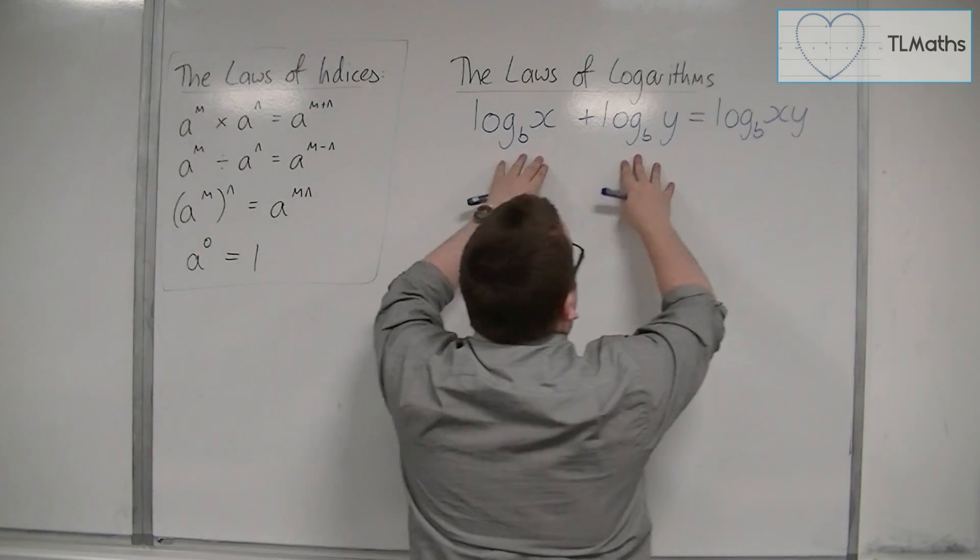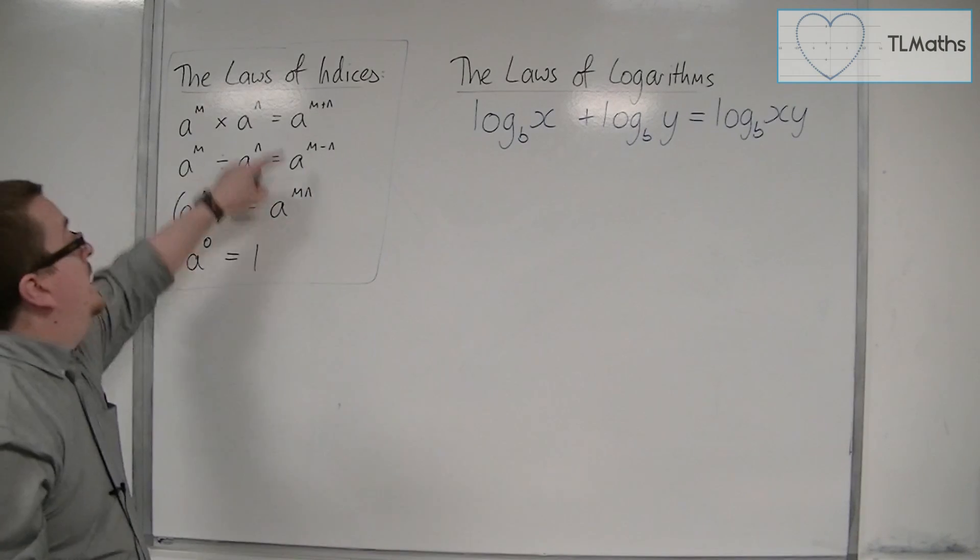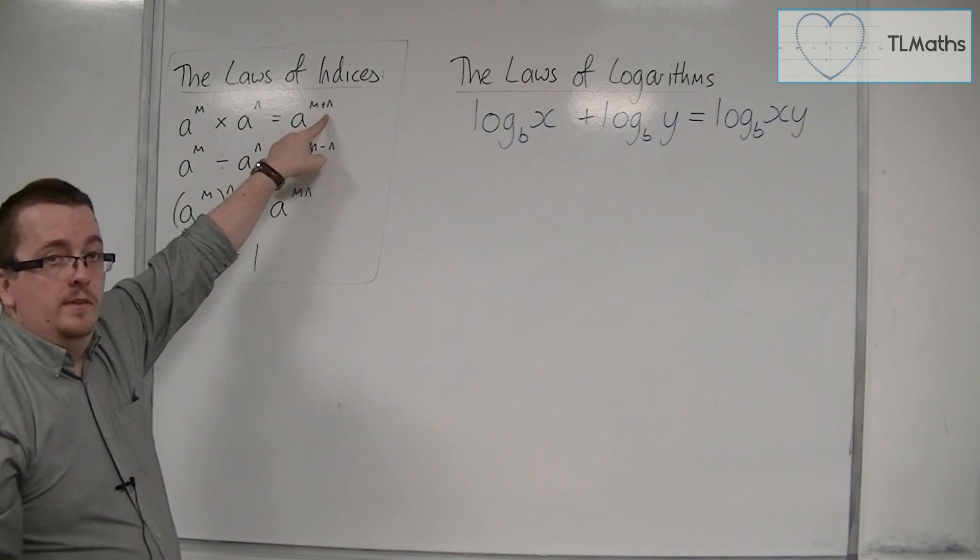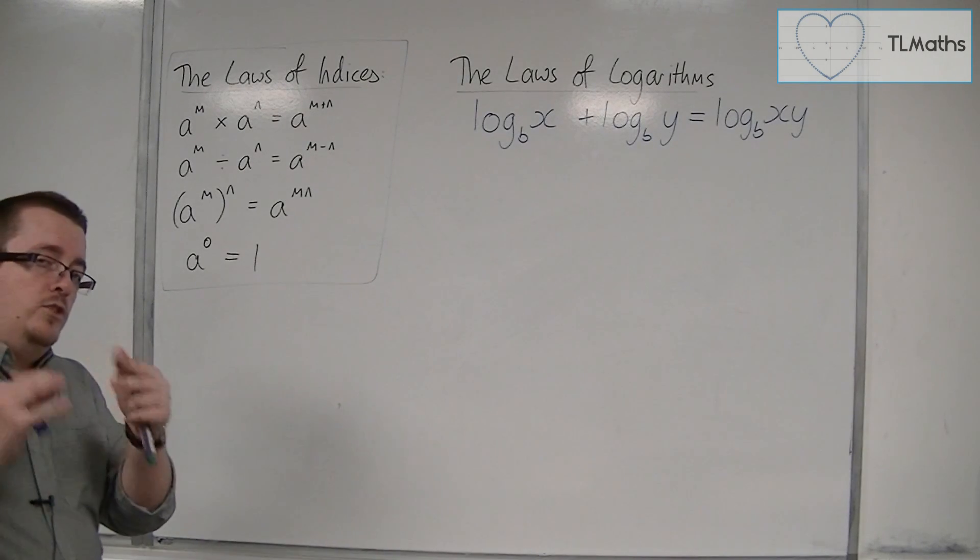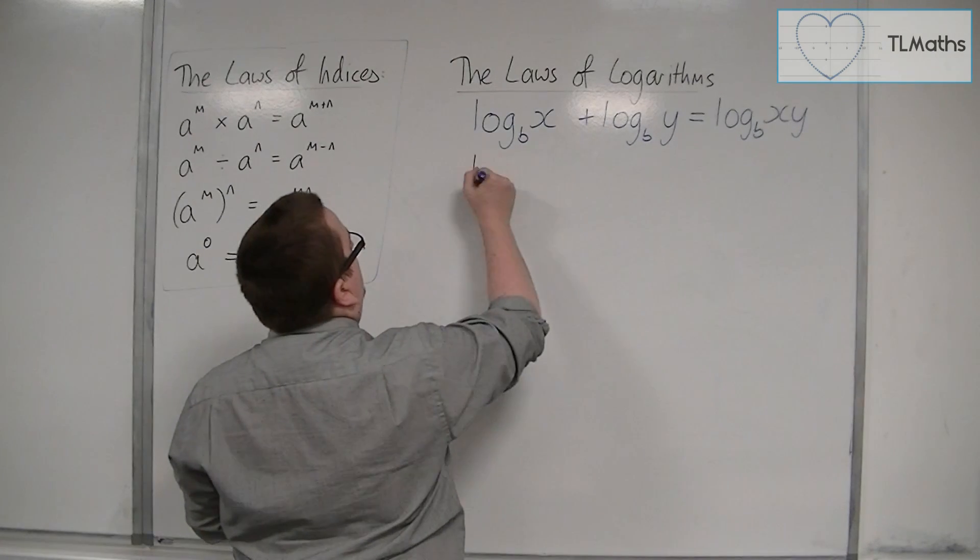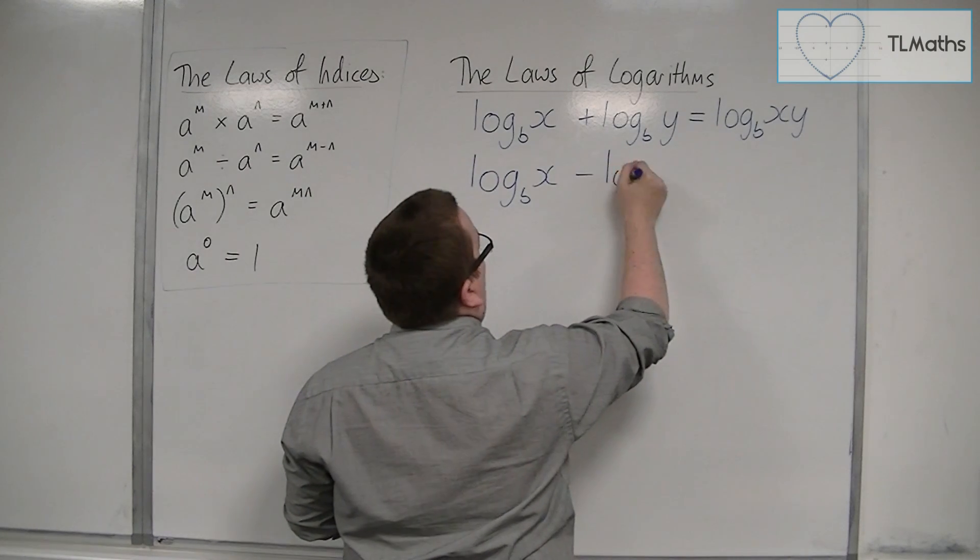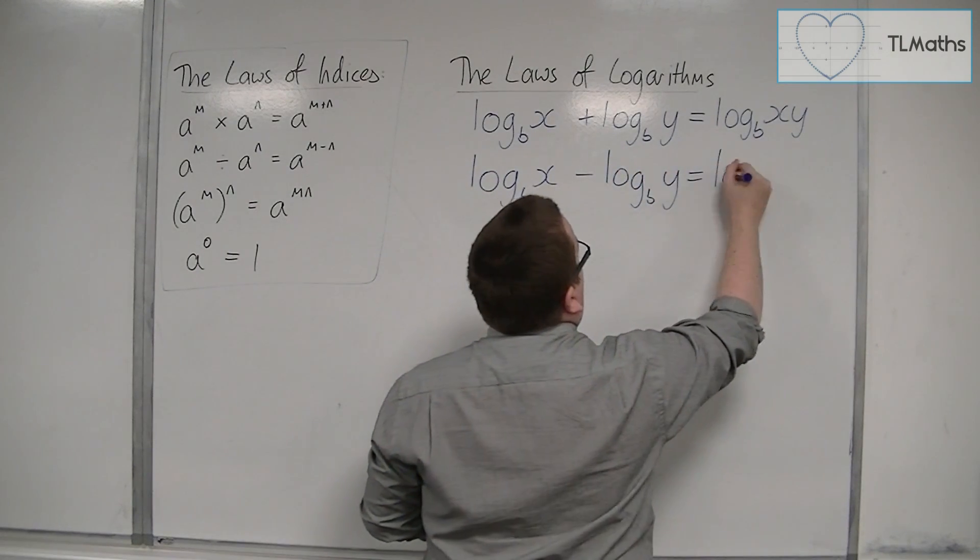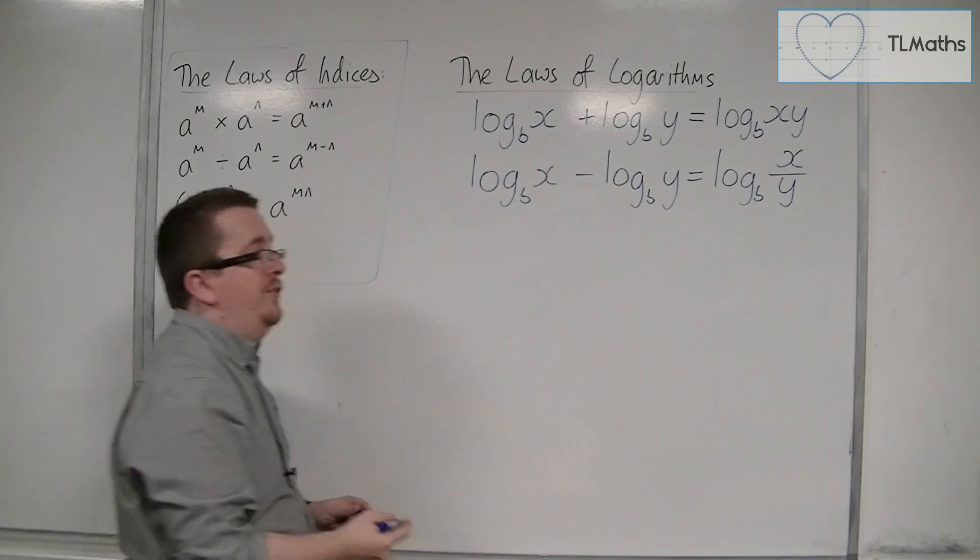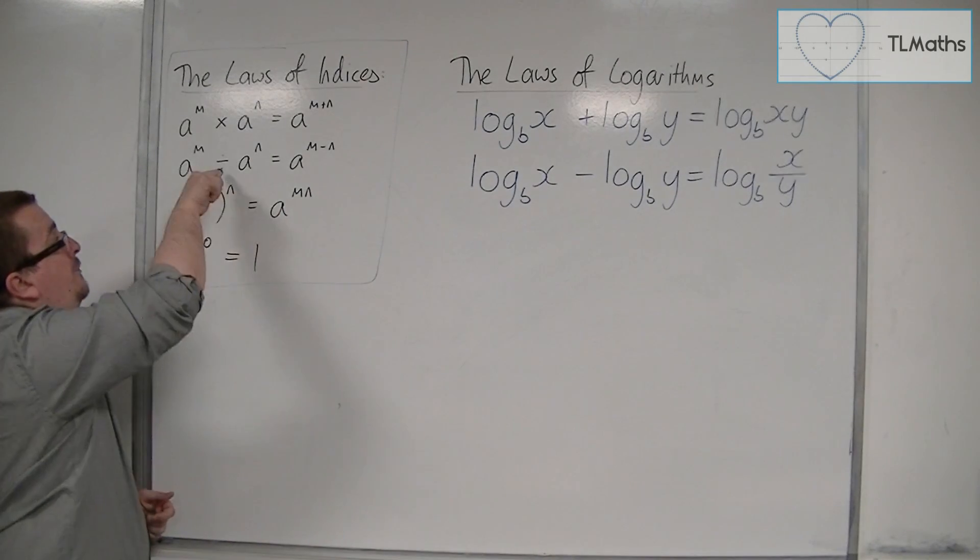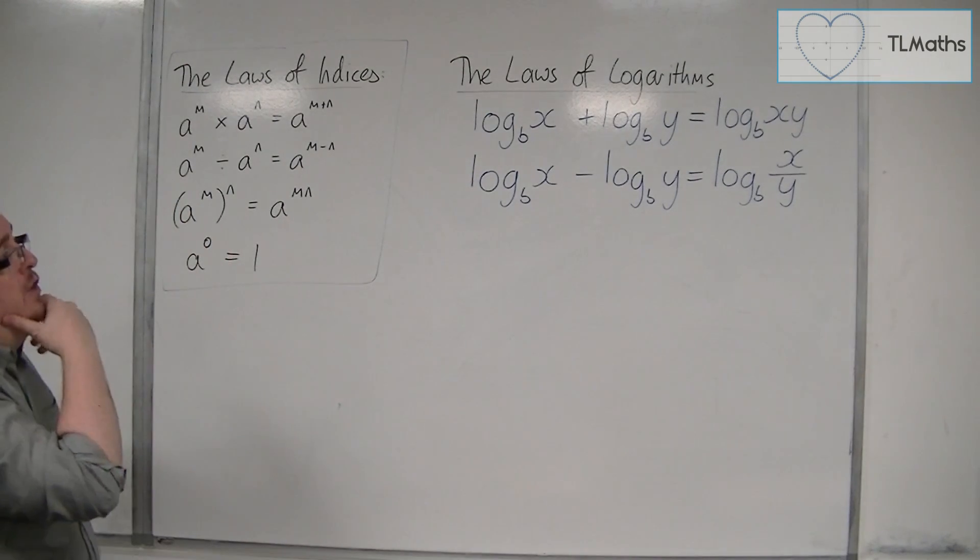We can combine two logarithms where a plus becomes a times, in much the same way as a times became a plus. It stands to reason that if I subtract one from the other, log base b of x minus log base b of y, then this is log base b of x divided by y, where a subtraction becomes a division. These are the first two laws of logarithms.